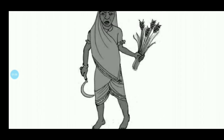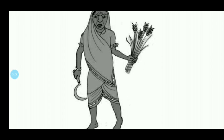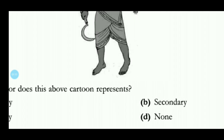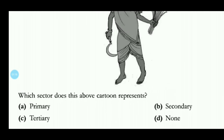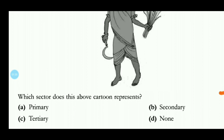The next is an economic picture asking which sector the cartoon represents. You can see agricultural equipment, indicating the primary sector — agriculture. So the answer refers to the primary sector, and option A appears correct.